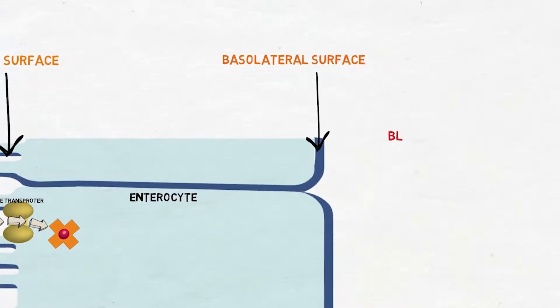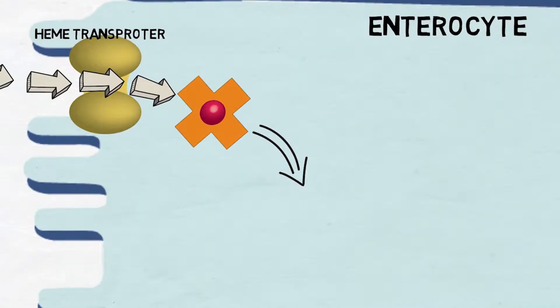Next to the basolateral surface we can show the bloodstream. Once inside the cell, heme iron is broken to Fe2+ by the enzyme heme oxygenase.